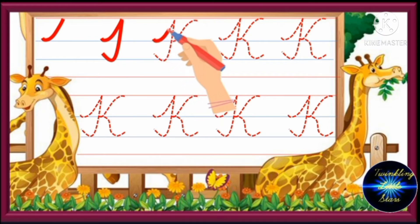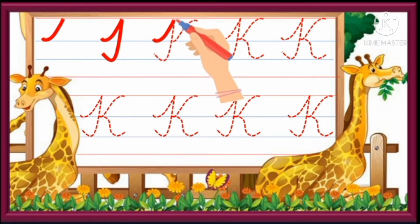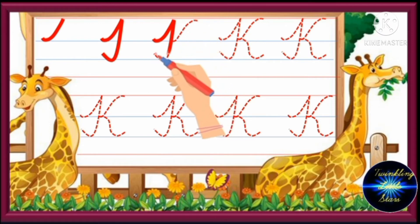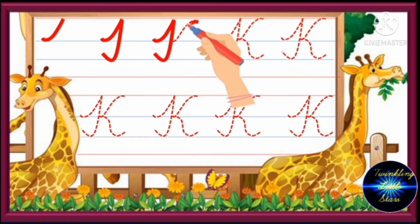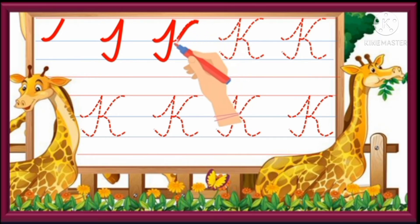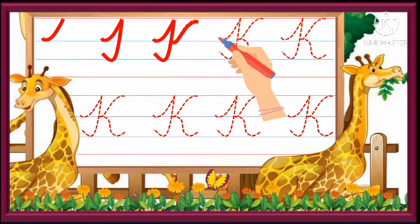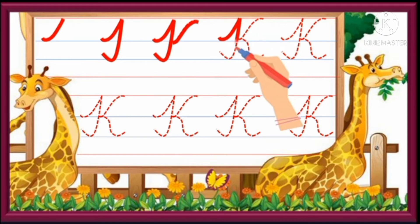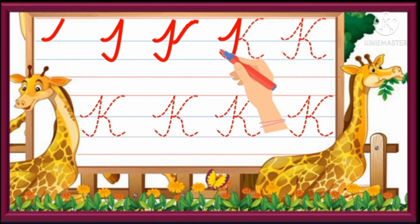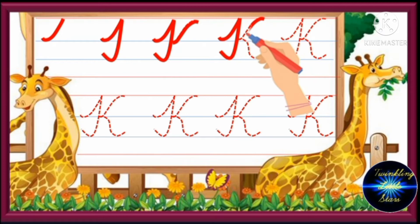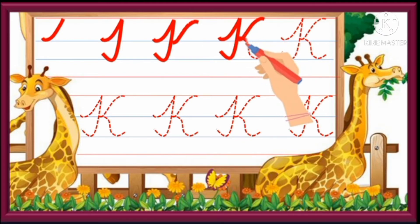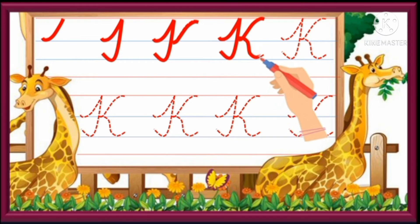Draw a half up curve. Draw a slant line then an up curve. Draw a little down curve then a slant line. Draw a half down curve then a half up curve.